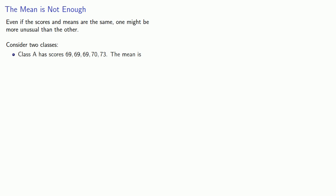Class A has scores of 69, 69, 69, 70, and 73. And if you calculate the mean score in this class, you'll find that the mean is 70.